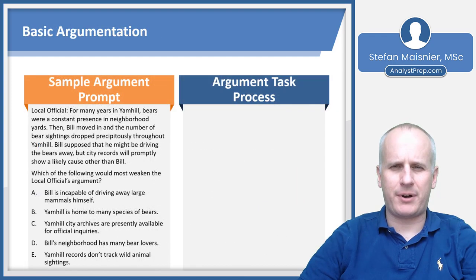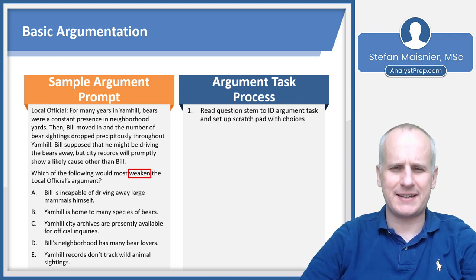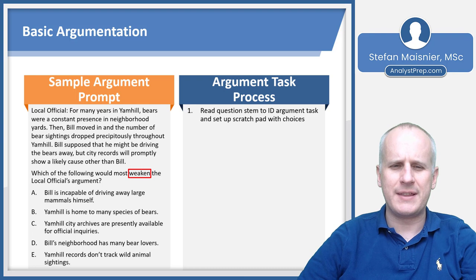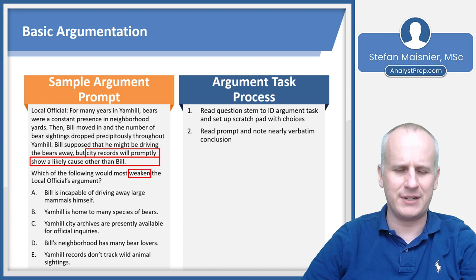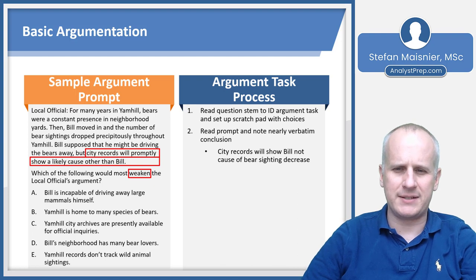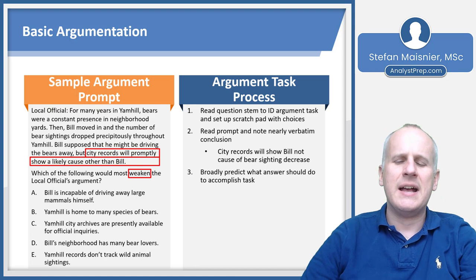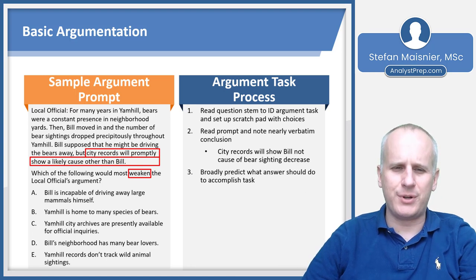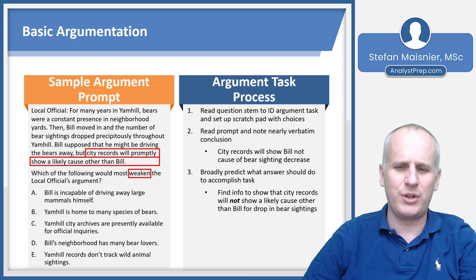Now let's look at a sample problem using this scenario. We read the question stem first: 'Which of the following would most weaken the local official's argument?' We see 'weaken' and 'argument,' so we're clearly dealing with an argument task. We know the conclusion is that city records will show a cause other than Bill for the bear sighting decrease. We need to find information showing that city records will not show a likely cause other than Bill.